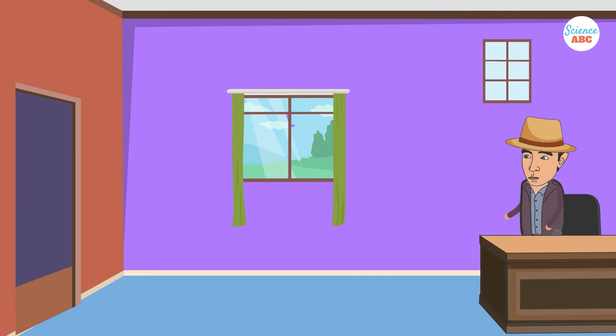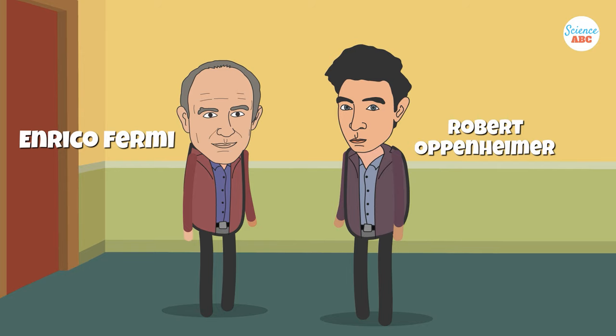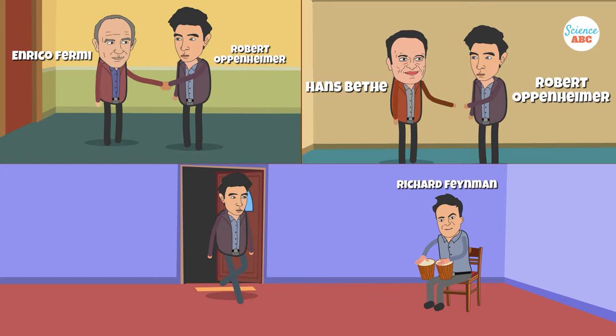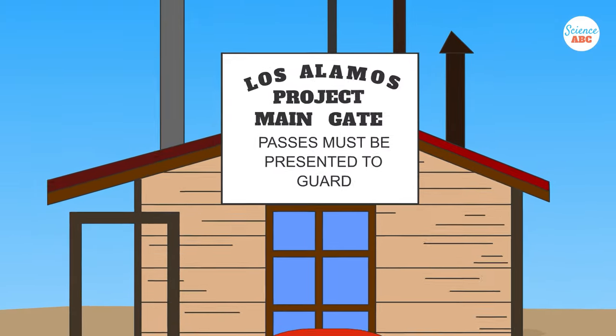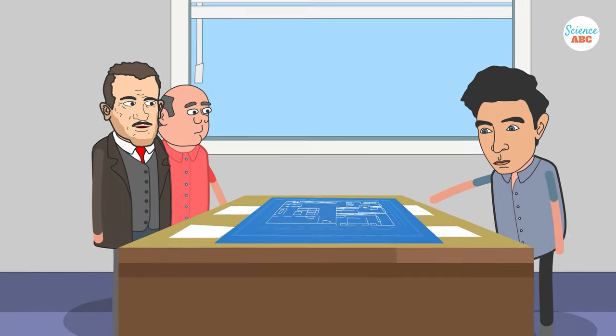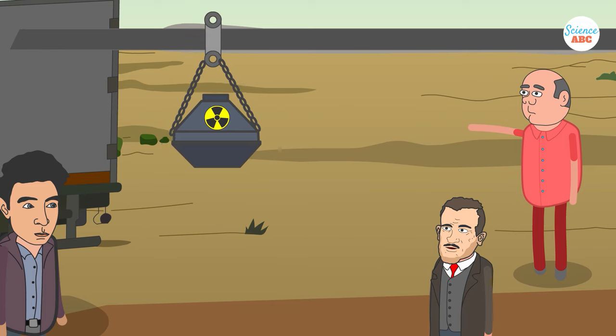In the span of six months, Oppenheimer managed to recruit the best physicists of the age—Enrico Fermi, Hans Bethe, and Richard Feynman, among others. He set up the work structure of the different labs and shielded the scientists from the rigid structure of military life, which allowed the scientists to fully realize their potential.